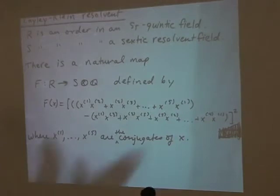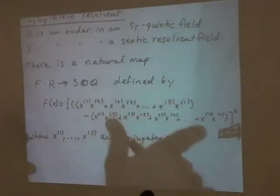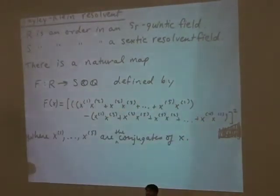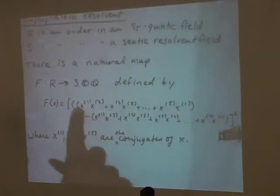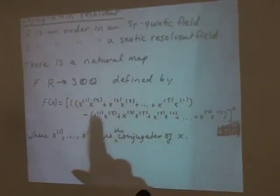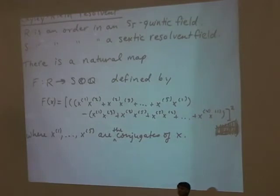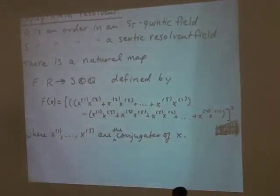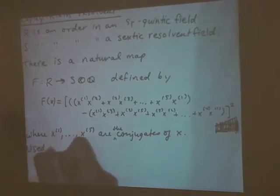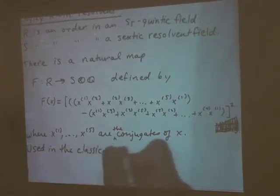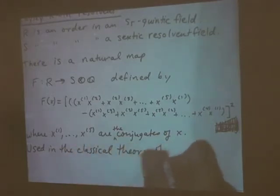If you square it, both the cycle and its complement are put on the same footing. This thing clearly has six conjugates, because it involves a five-cycle and the complement of the five-cycle, giving six orbits. This is a natural map from a quintic thing to a sextic thing, and it was a very important map used in the classical theory of solving the quintic.